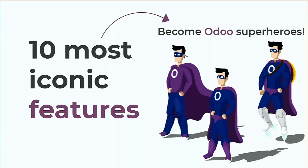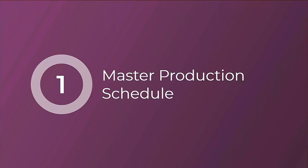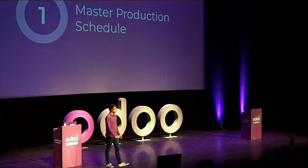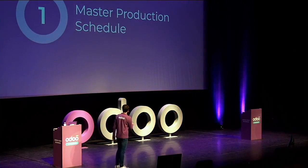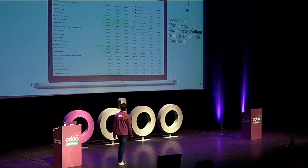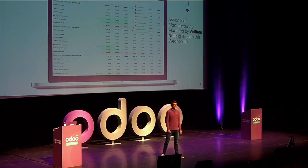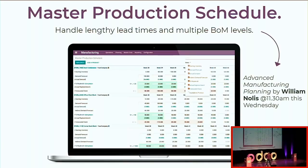First, I will start by presenting quickly the refactored master production schedule. You know it already existed before since version 10 — I actually presented the first version here about three years ago. In this refactored version we have the opportunity to filter the master production schedule per warehouse, which is quite nice because you don't have to do it at a high level across the entire company.